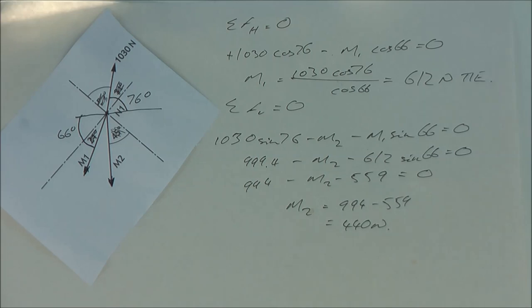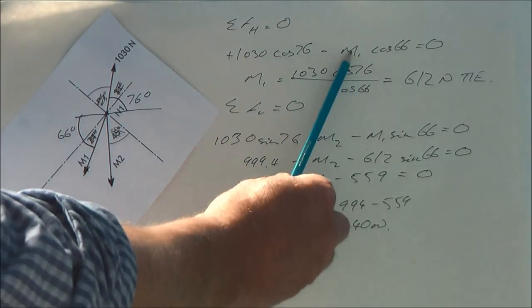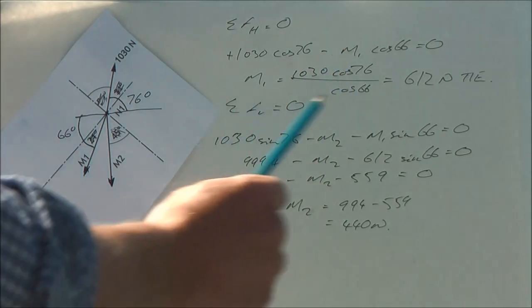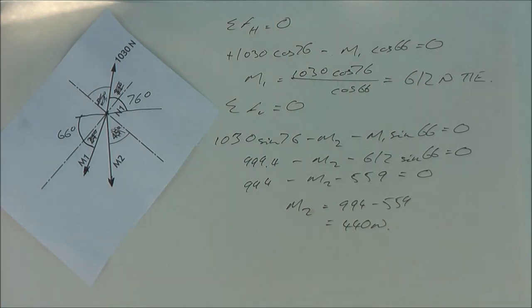So if I do the sum of force horizontally equals zero, I have the horizontal component of 1030: 1030 cos 76, minus the horizontal component of M1, which is M1 cos 66. Rearranging that, I get M1 is 612 newtons. And it's a tie.